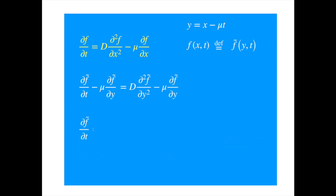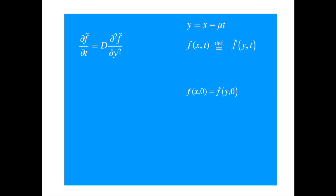So the convection terms cancel and as expected the equation reduces to the diffusion equation. We will need to transform the initial condition as well, which is the situation at time 0, but y and x are equal when t is equal to 0. So we don't have much to do there.